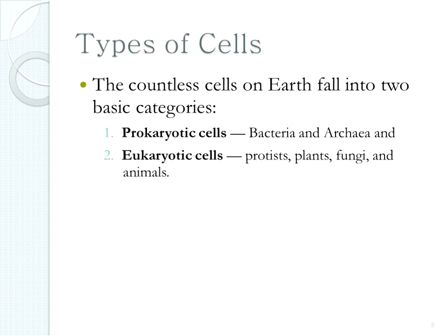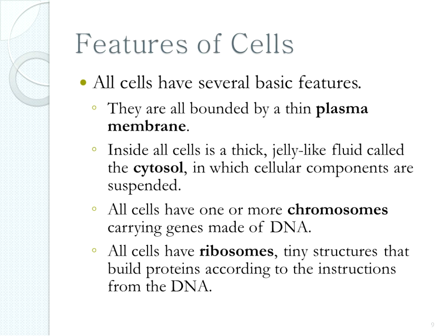When we talk about cells, there are two types. All cells fall into one of two categories: they are either prokaryotic cells or eukaryotic cells. Prokaryotic cells are things like bacteria — single-celled organisms. Eukaryotic cells are things like plants and animals.